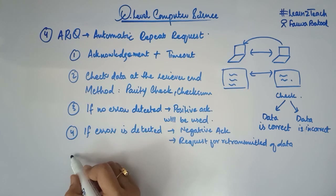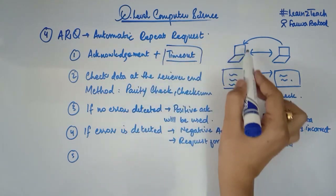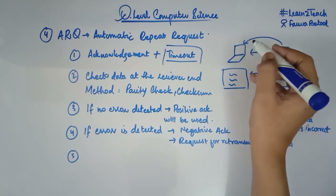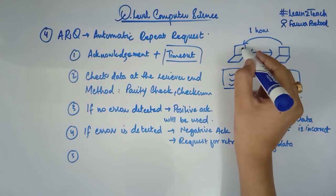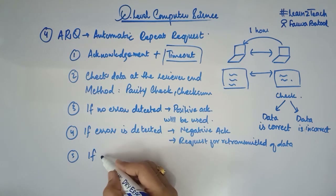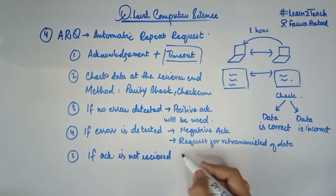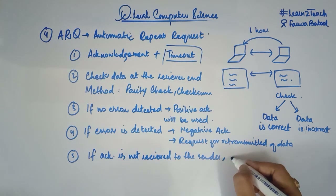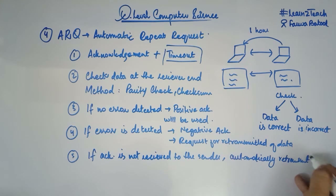The third scenario is when a timeout has occurred — the sender did not receive an acknowledgement and the timeout period has passed. Let's suppose the sender must receive an acknowledgement within one round. If that time has passed and no acknowledgement has been received by the sender, then the data will be retransmitted automatically.